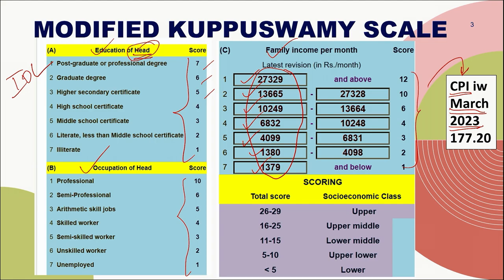The scores for income, occupation, and literacy are added together, and based on the total score the socioeconomic status is classified into upper, upper middle, lower middle, upper lower, and lower classes.